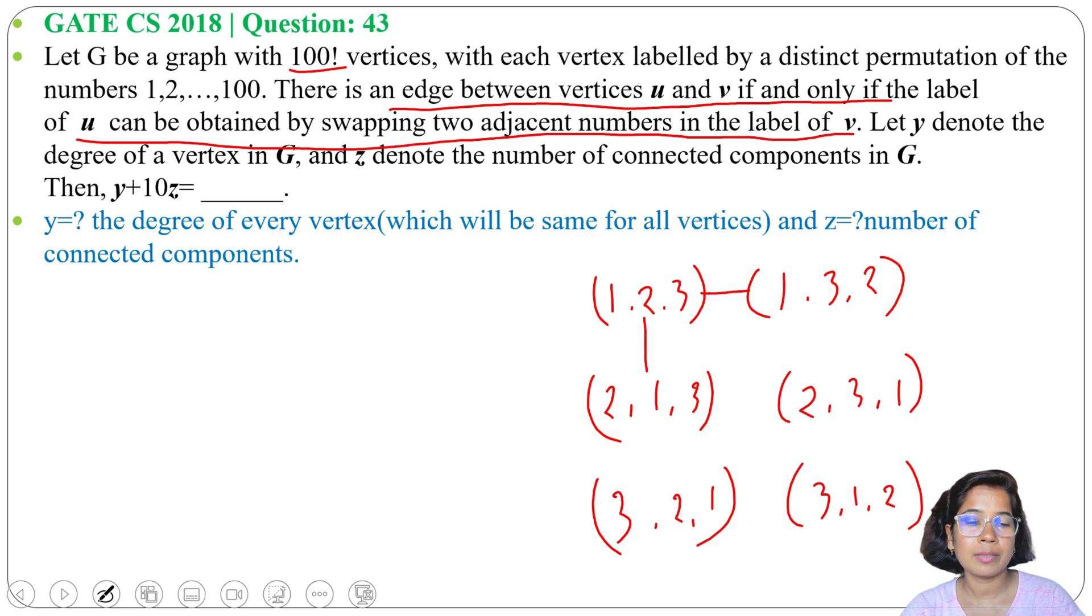Next, (2,1,3) is adjacent to (2,3,1) - we can get (2,3,1) by swapping 1,3. Next, (3,2,1) is adjacent to (3,1,2) - we can get (1,2) by swapping 2,1. Then (3,2,1) is also adjacent to (2,3,1) - we can get (2,3,1) by swapping this 3,2. (3,1,2) is adjacent to (1,3,2) - we can get this by swapping 1 and 3.